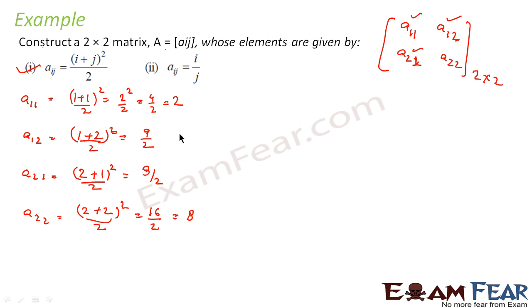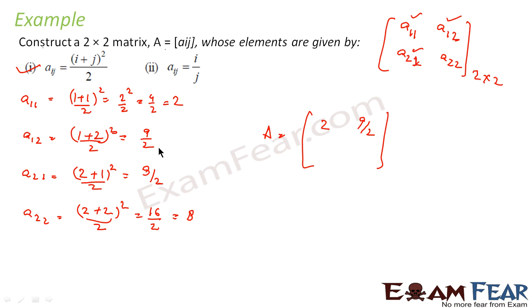Now I have all the elements: a11=2, a12=9/2, a21=9/2, a22=8. So matrix A is: [2, 9/2; 9/2, 8] and the order is 2×2.